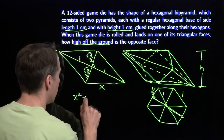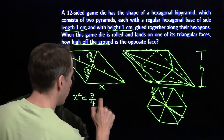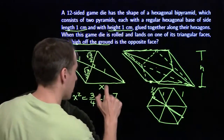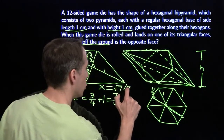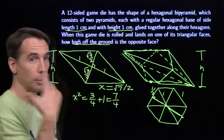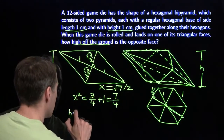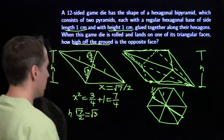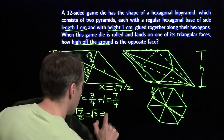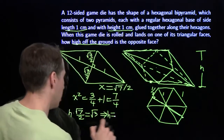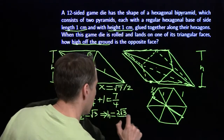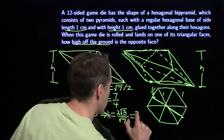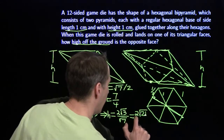We've got x squared. I square root three over two — I get three quarters. I square one — I get one. I add those two together, I get seven quarters. So I take the square root of that, and x is the square root of seven over two. Now x times h equals the area of the rhombus, which is root three. So h times the square root of seven over two equals root three. Multiplying both sides by two over the square root of seven, h equals two times the square root of three over the square root of seven. Multiply top and bottom by root seven, and I get two times the square root of twenty-one all over seven.